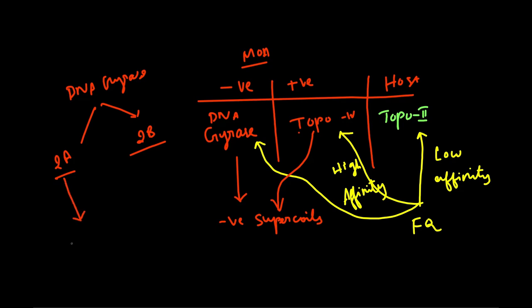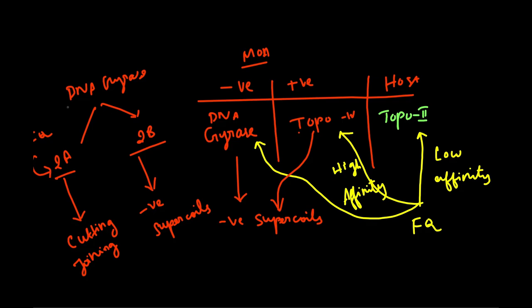The A subunit is responsible for cutting and joining the DNA. The B subunit is responsible for introduction of negative supercoils. Since Fluoroquinolones bind with the A subunit, the DNA Gyrase enzyme is inhibited. This is the mechanism of action in Gram-negative bacteria. In Gram-positive bacteria, Fluoroquinolones inhibit Topo-4. In host cells, Fluoroquinolones bind with low affinity to Topo-2, so there is low toxicity to host cells.